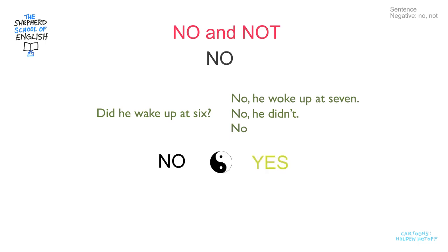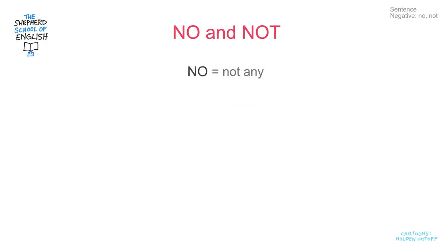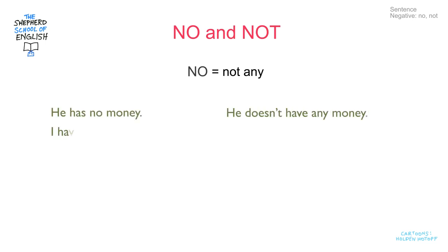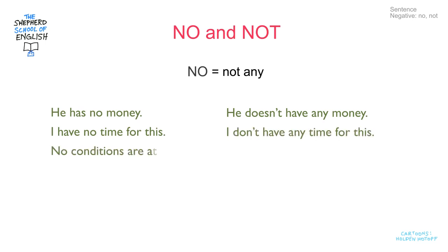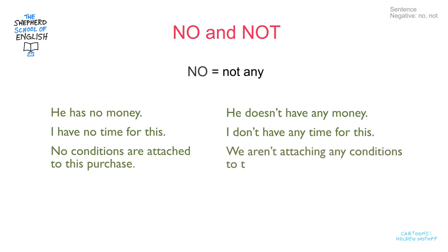That's the main way we use no, but we can also use no with a noun and it means not any. Here are some examples. He has no money — he doesn't have any money. I have no time for this — I don't have any time for this. No conditions are attached to this purchase — we aren't attaching any conditions to this purchase.